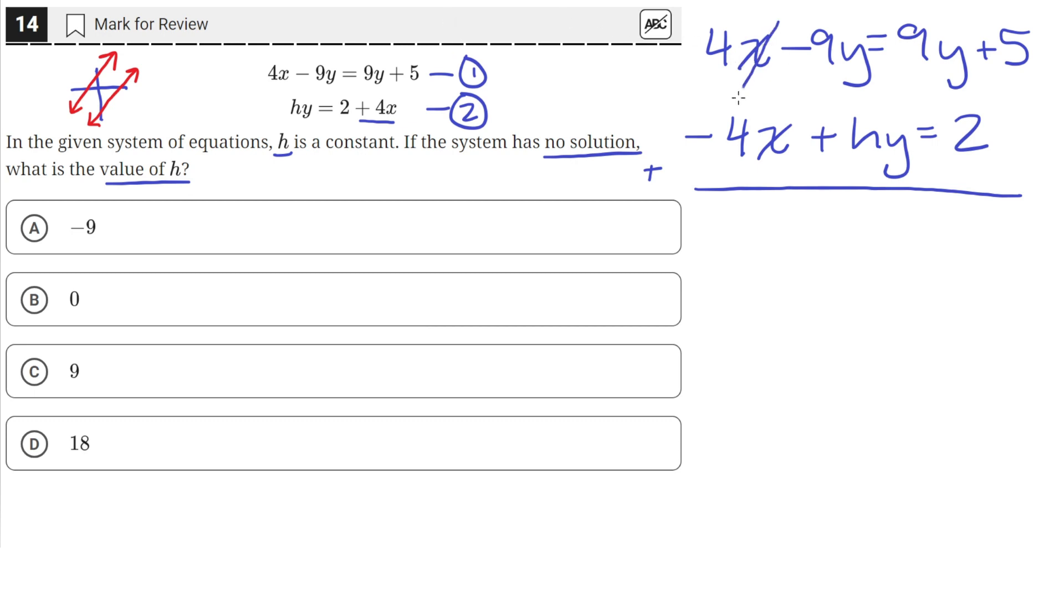So 4x plus minus 4x is just going to be 0, so that cancels out. And then negative 9y plus hy. So we're going to have a negative 9y plus hy. Then we'll have a 9y on this side, and then we'll have a plus 7.